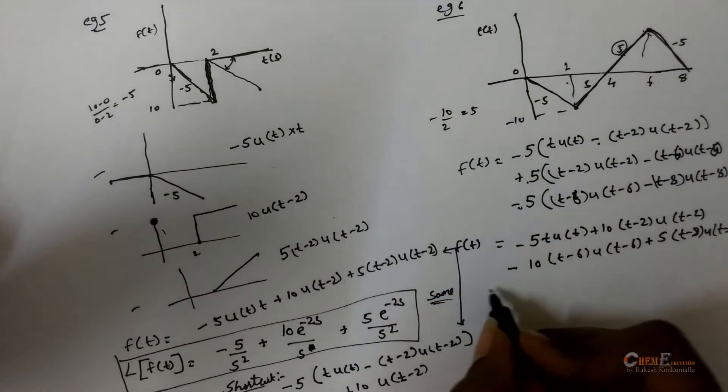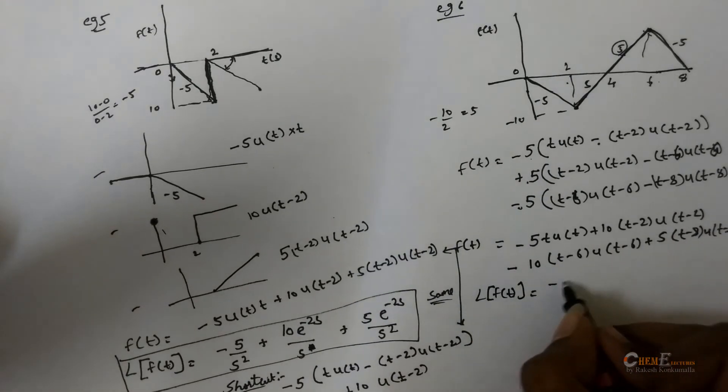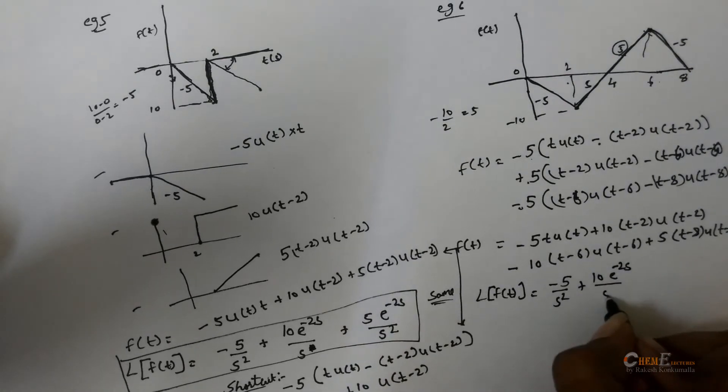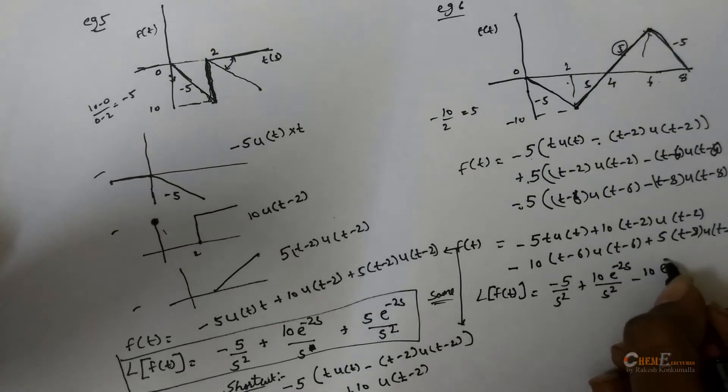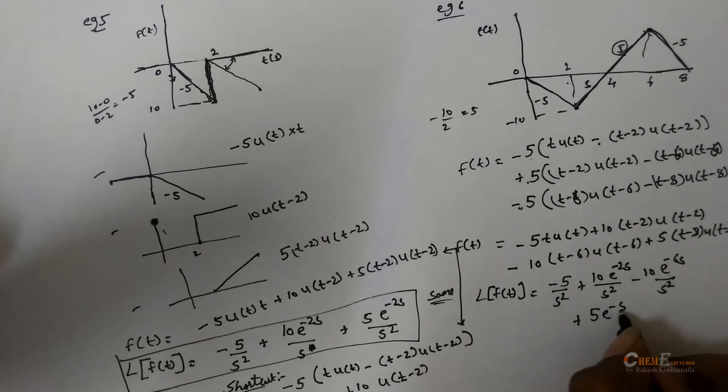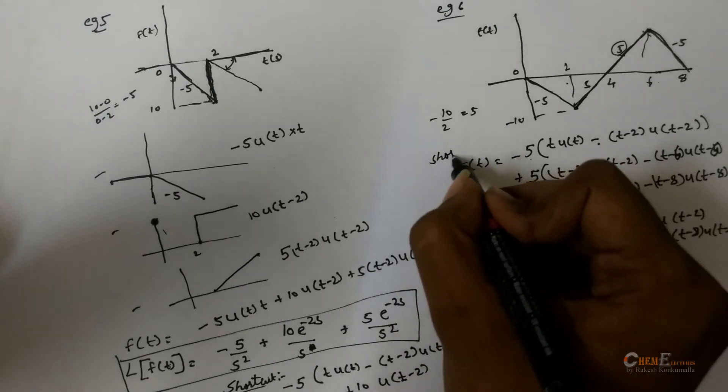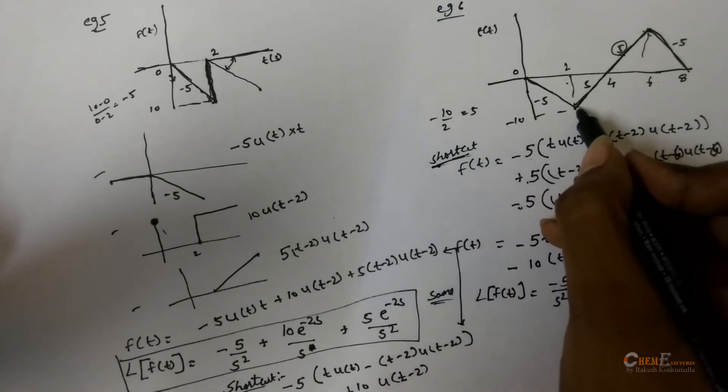This is the f. Find the Laplace for this function. It will be minus 5 by s square plus 10 e power minus 2s by s square minus 10 e power minus 6s by s square plus 5 e power minus 8s by s square. If you follow this shortcut, you can get everything very fast and save time. Otherwise, you can go with a general procedure.